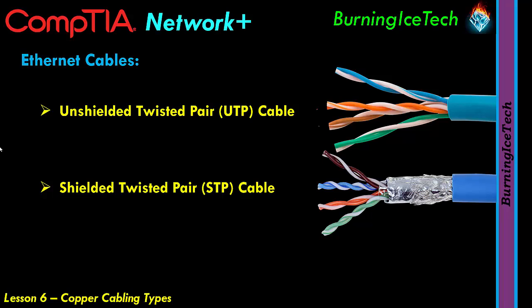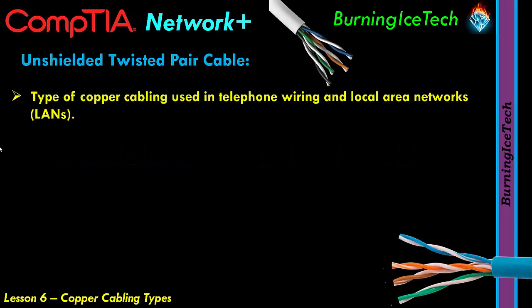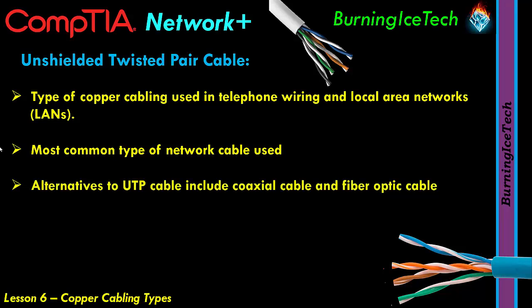Unshielded Twisted Pair is a type of copper cabling used in telephone wiring and local area networks. These days you're going to see this predominantly used in local area networks. This is the most common type of network cable being used to this day. Alternatives to UTP include coaxial cable and fiber optic cable. We're not going to cover fiber optic cable in this video because it's not a copper cable, but it will be discussed in one of the next few videos. Coaxial cable we will cover today because it is a copper cable.